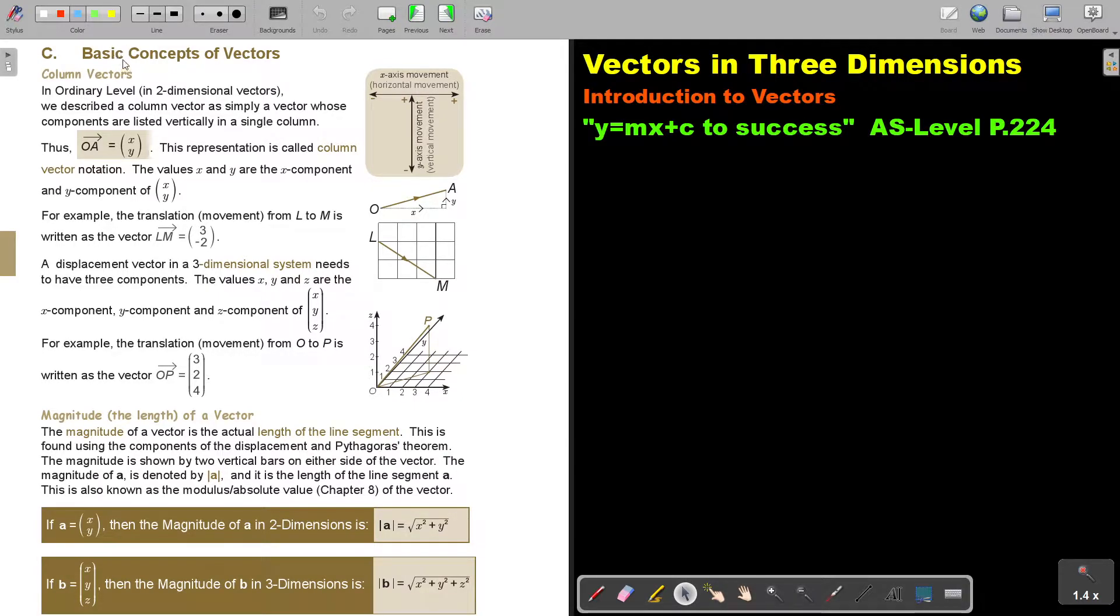Let's go through a few basic concepts of vectors. A lot of this we already did in ordinary level. Column vectors. In ordinary level, in two-dimensional vectors, we describe a column vector as simply a vector whose components are listed vertically in a single column.